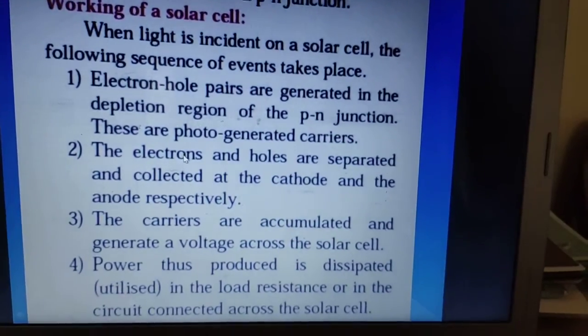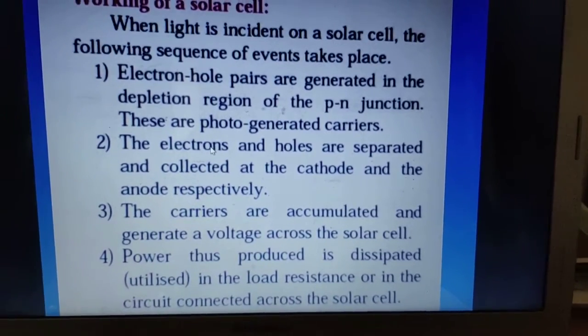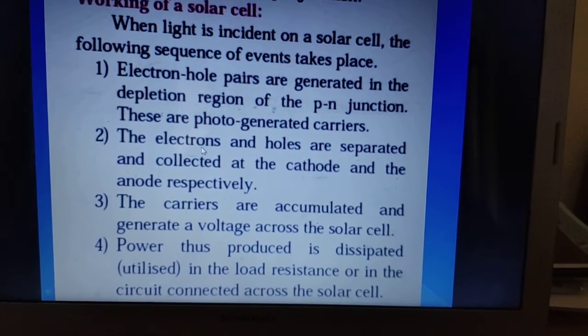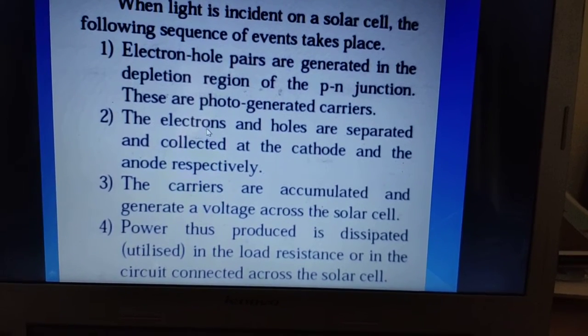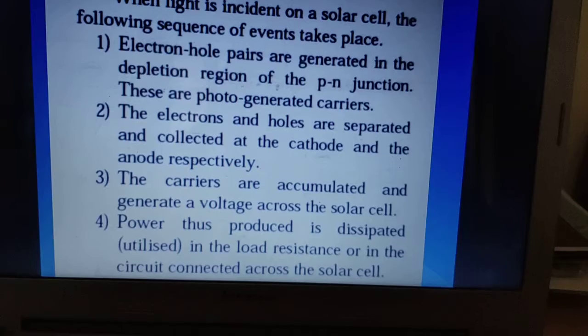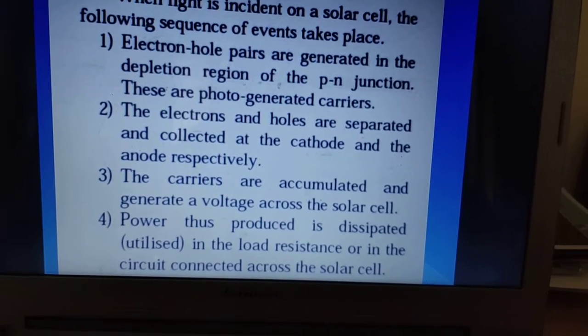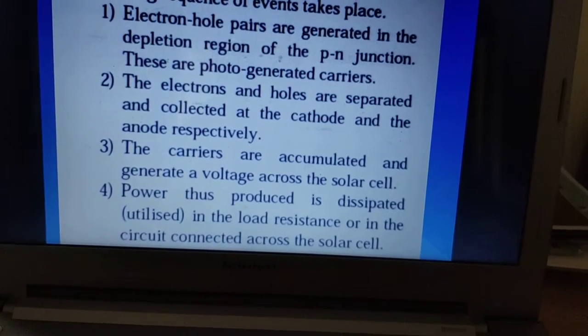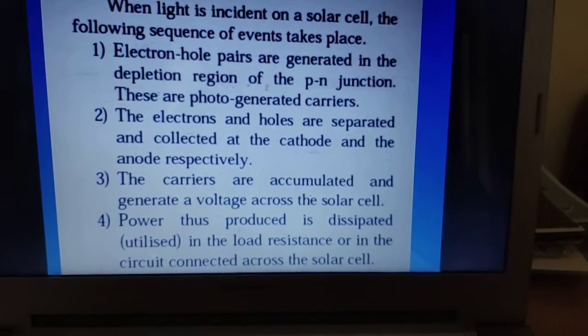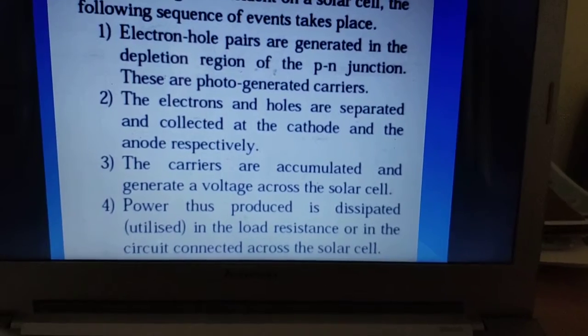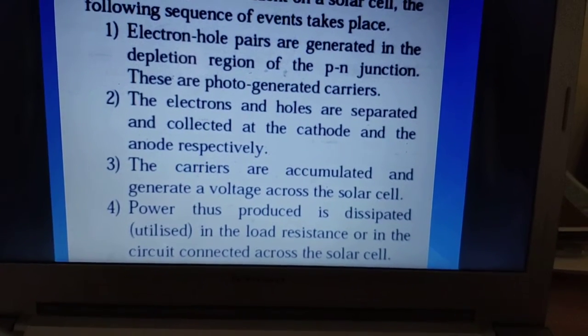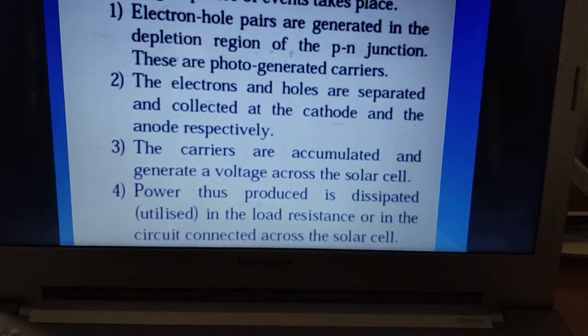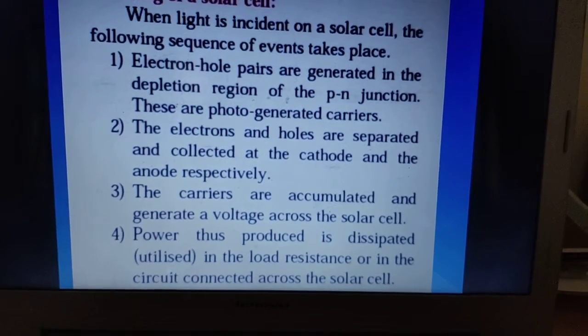See, this is the working of the solar cell. When light is incident on a solar cell, the following sequence of events takes place. The electron-hole pairs are generated in the depletion region of the p-n junction. These are photo-generated carriers. The electron and holes are separated and collected at the cathode and anode respectively. The carriers are accumulated and generate a voltage across the cell. The power thus produced is dissipated in the low resistance or in the circuit connected across the solar cell.